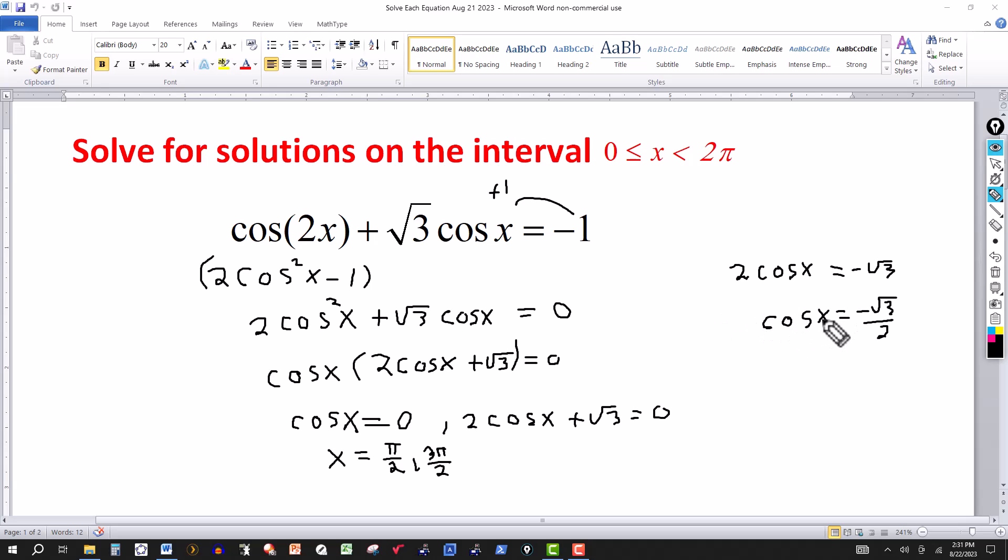Now again, in this one here, square root of three over two is a value that you should recognize from your 30-60 right triangle. 30 degrees here, and this angle over here is 60 degrees. Right triangle. And the square root of three would be here. This side would be one, and this side would be two.